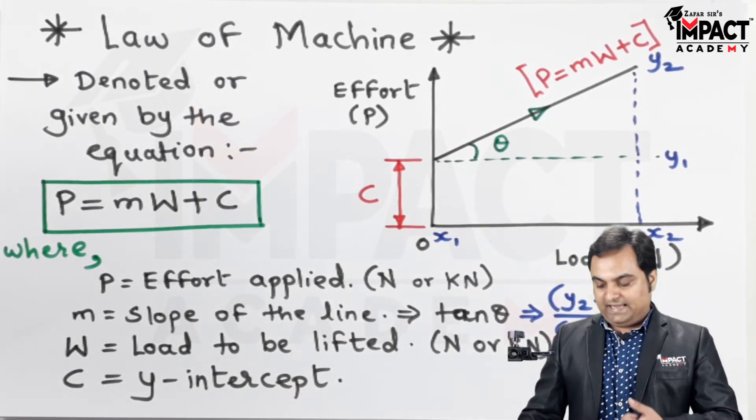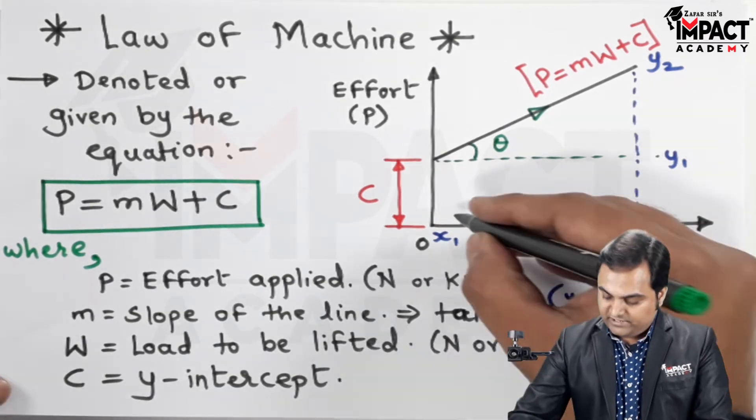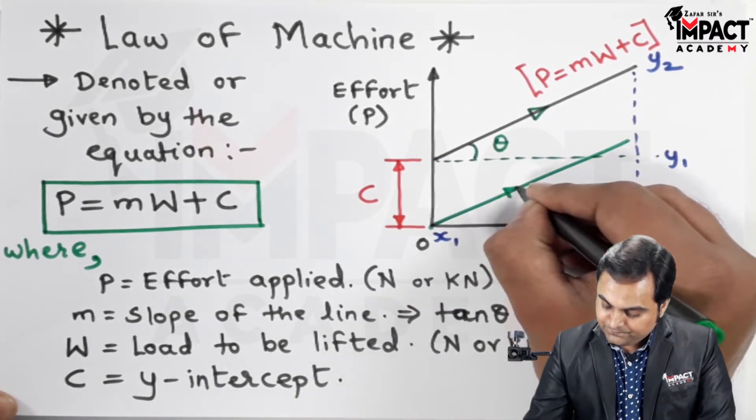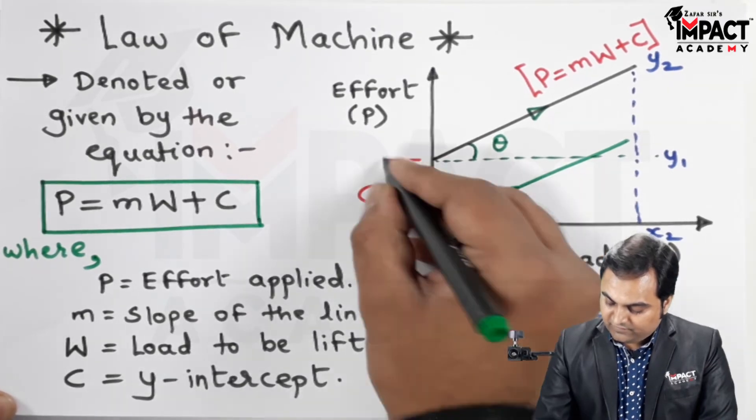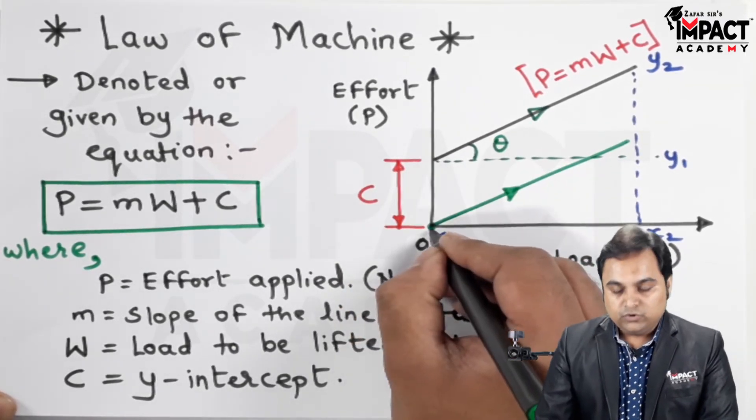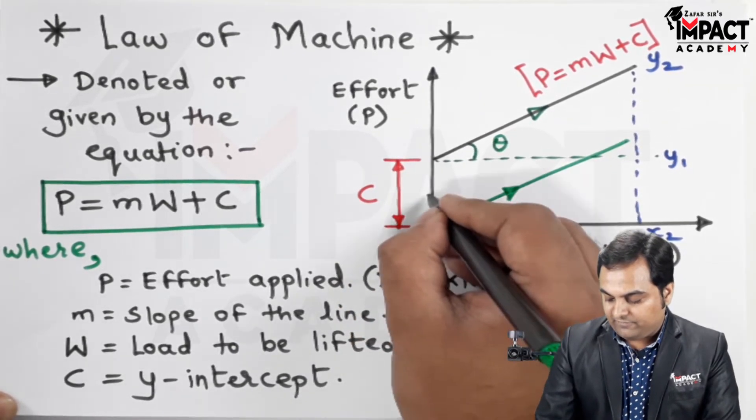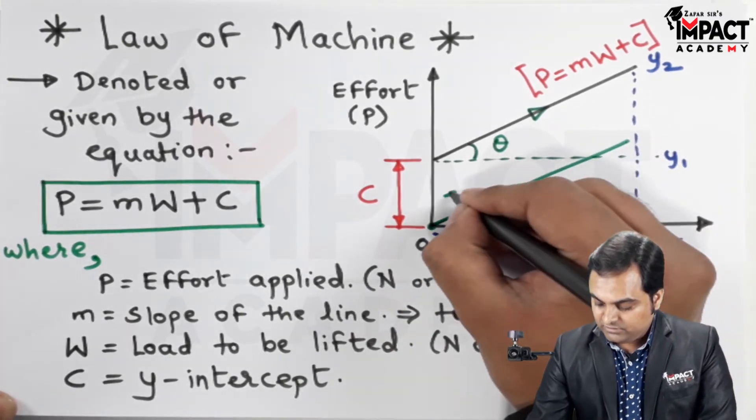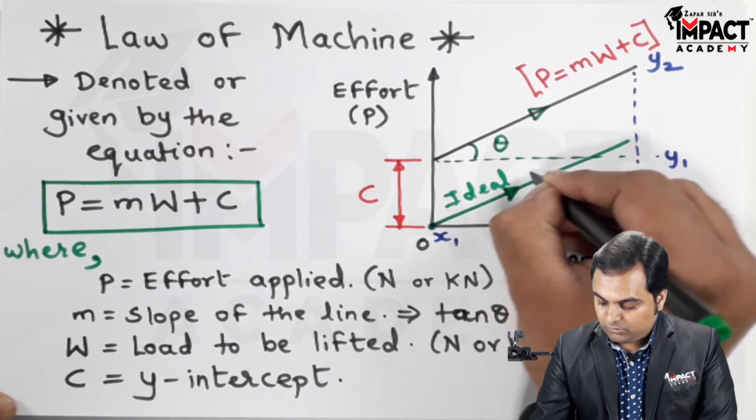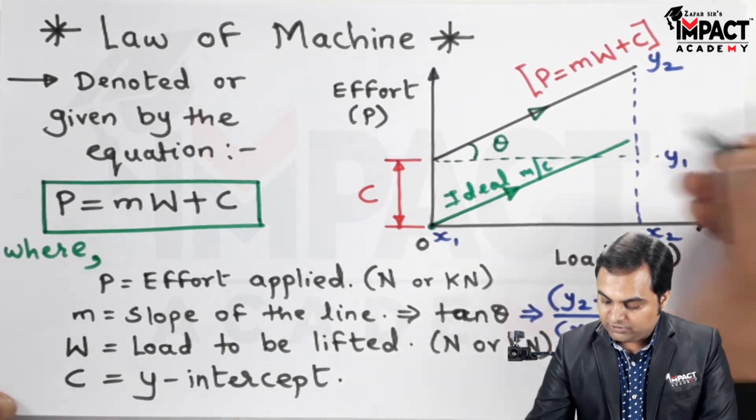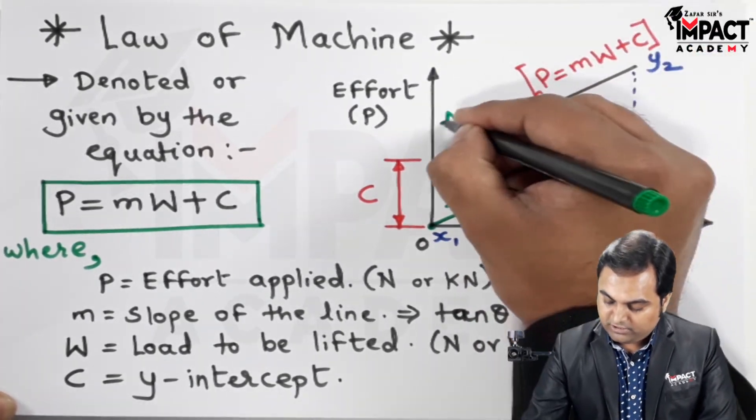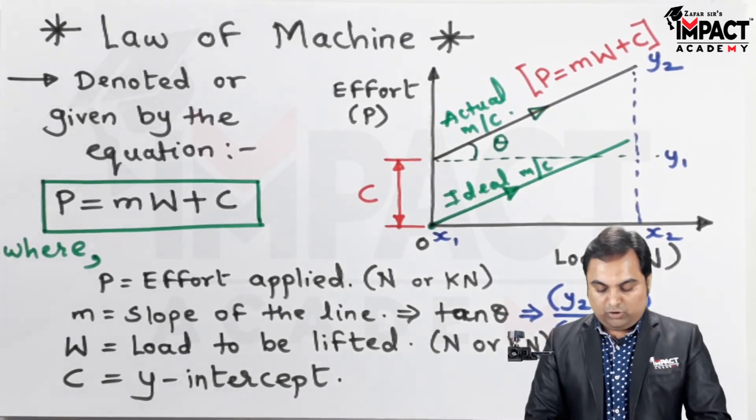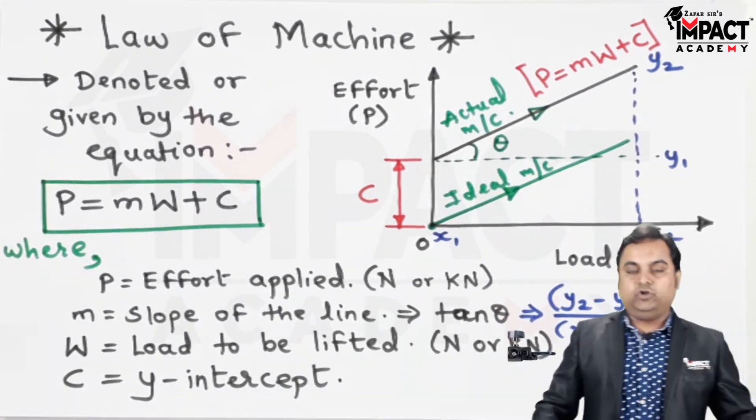This is the graph which I had drawn for an actual machine. If it would have been an ideal machine, it would have started from this origin, and here the y-intercept would have been zero. So the moment we apply effort, load gets lifted without any friction. This is a line or law of machine for an ideal machine, whereas the one which I had drawn above, that is for an actual machine.